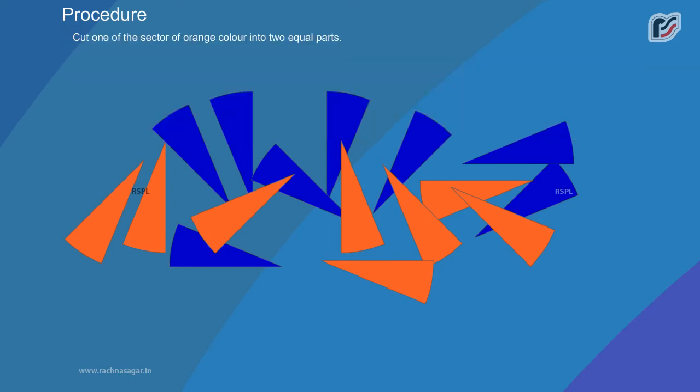Cut one of the sector of orange colour into two equal parts. Arrange these 17 sectors in alternate manner so that they form a rectangular shape.